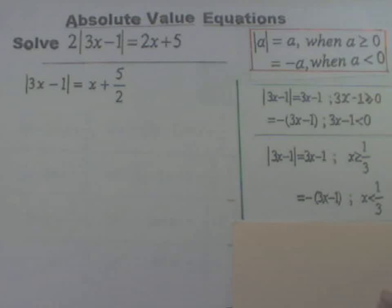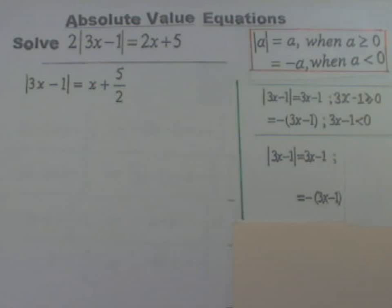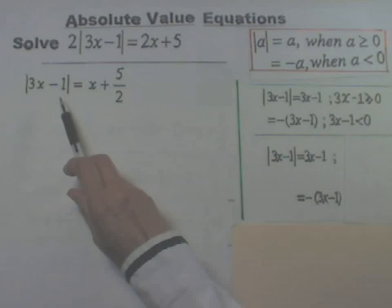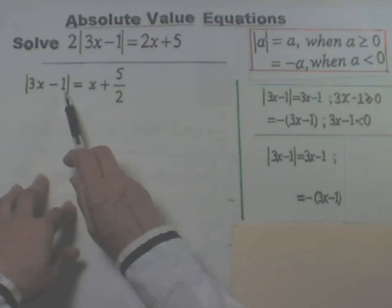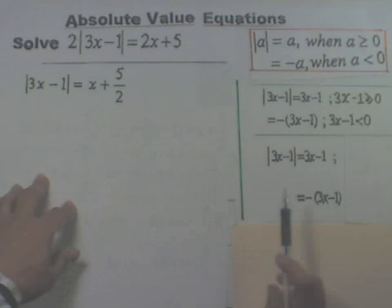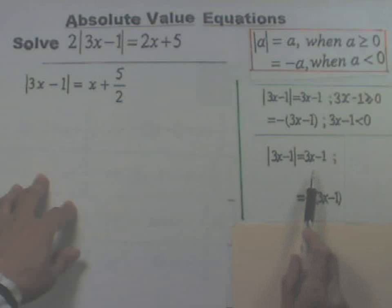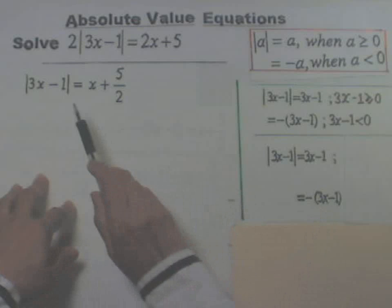When we are just solving absolute value equations, we don't need the condition on x — we need it when we are graphing absolute value functions, so let's cover that part up for the moment. Going back, the absolute value of 3x minus 1 can be simplified into two expressions: 3x minus 1, or the opposite of 3x minus 1. So that's what we are going to do next.